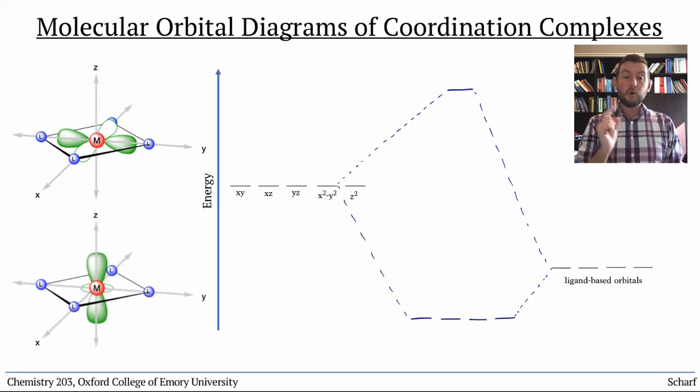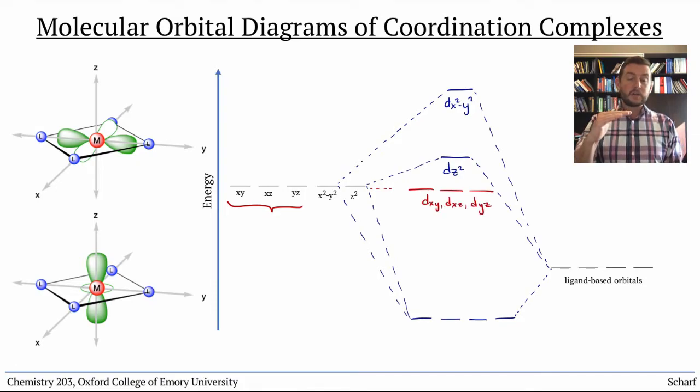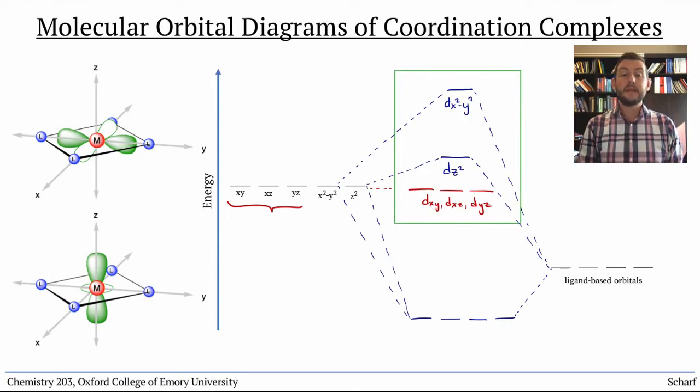But the torus of the dz² orbital - that little donut around the middle - also overlaps a little bit with the ligand orbitals. The result is that the dxy, dxz, and dyz orbitals are non-bonding, the dz² orbital is slightly antibonding, and the dx²-y² is quite high in energy. This is the classic d orbital splitting diagram for a square planar complex.